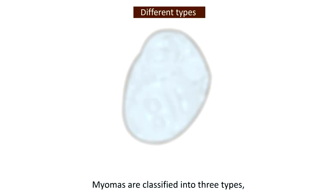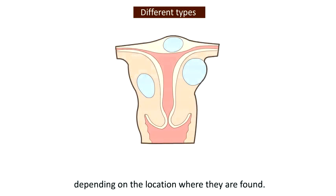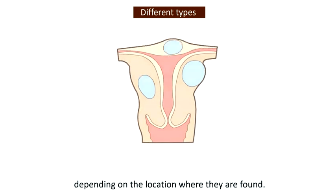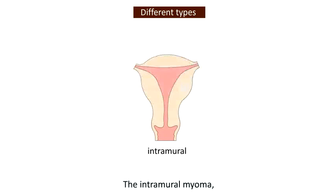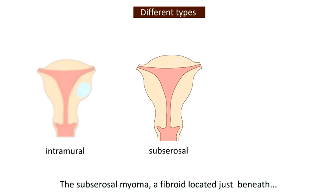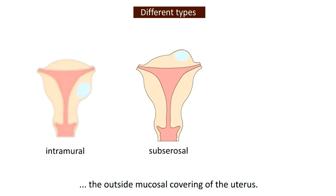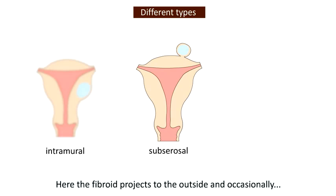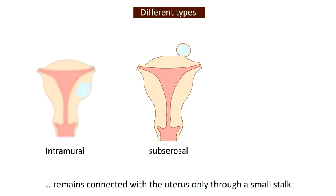Myomas are classified into three types depending on the location where they're found. The intramural myoma is a fibroid that grows in the muscular wall of the uterus. The subserosal myoma is a fibroid located just beneath the outside mucosal covering of the uterus. Here the fibroid projects to the outside and occasionally remains connected with the uterus only through a small stalk.